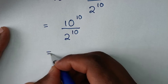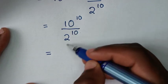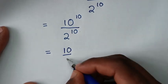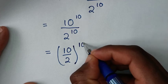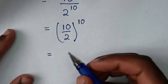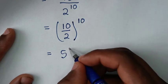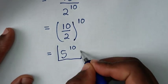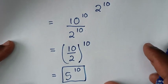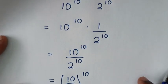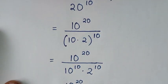Then it will be equal to: division of exponents with the same power of 10, so it will be this base over this base — 10 over 2 — bracket this same power of 10. Then 10 over 2 is 5, so 5 power of 10 is our final answer. Thank you for watching, don't forget to subscribe to my channel, and see you in the next video — bye bye.